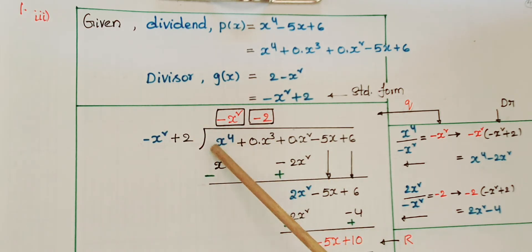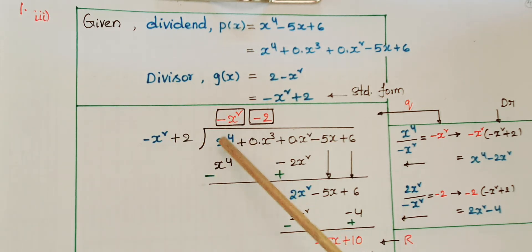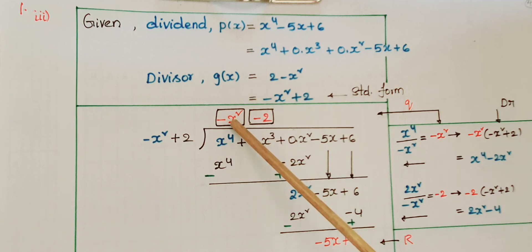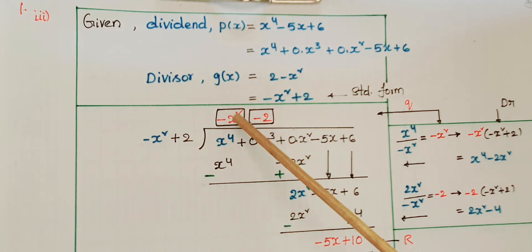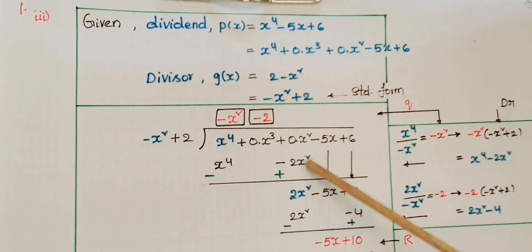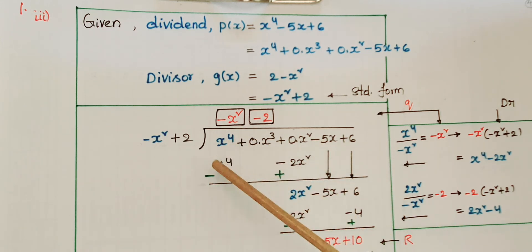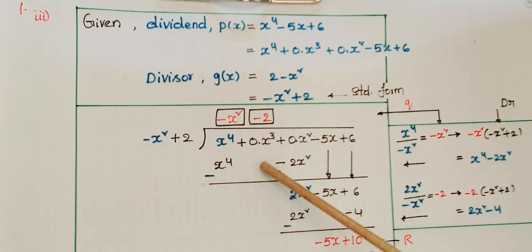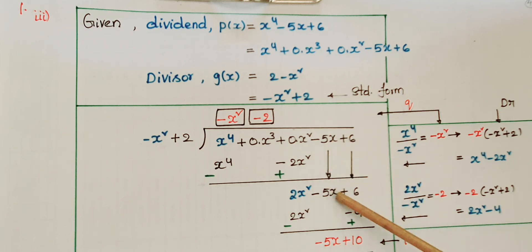Write the divisor and dividend in position. Take x⁴ divided by -x² = -x². Write -x² at the quotient place. Multiply -x² with (-x² + 2): (-x²)(-x²) = x⁴, and (-x²)(+2) = -2x². There is no x³ term, so write 0 for that. Subtract: x⁴ - x⁴ = 0, no x³ term, and 0 + 2x² = 2x². Bring down -5x and +6.